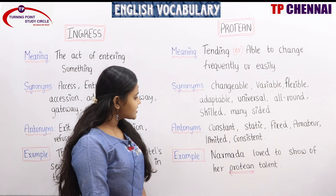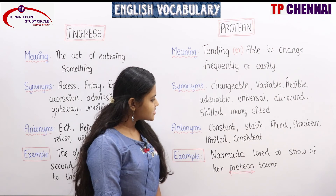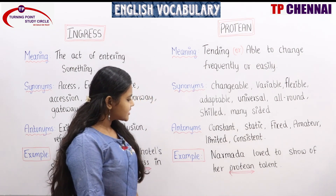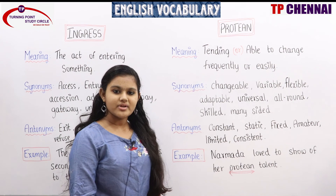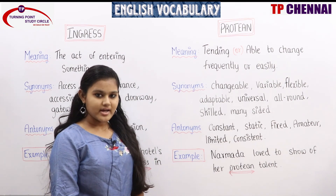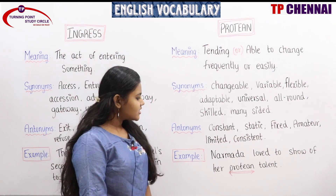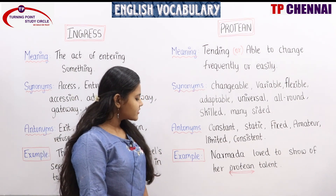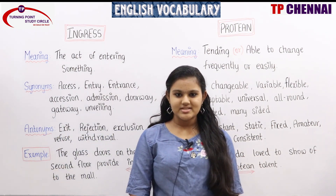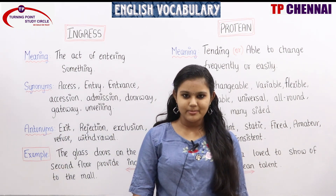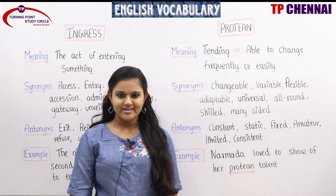Antonyms: constant, static, fixed, amateur, limited, consistent. All these words can be related to antonyms. Example: Narmada loved to show off her protean talent. That's the end of today's session. Thank you very much for joining. We will meet tomorrow. Have a great day.